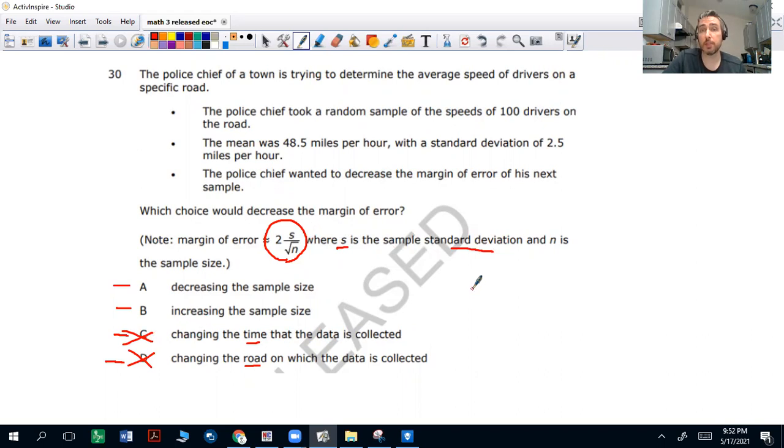So what happens? We have two times... Let's start. We got 100 drivers, right? Random sample of 100 drivers. So let's do two times your standard deviation, S, so 2.5 divided by the square root of 100.